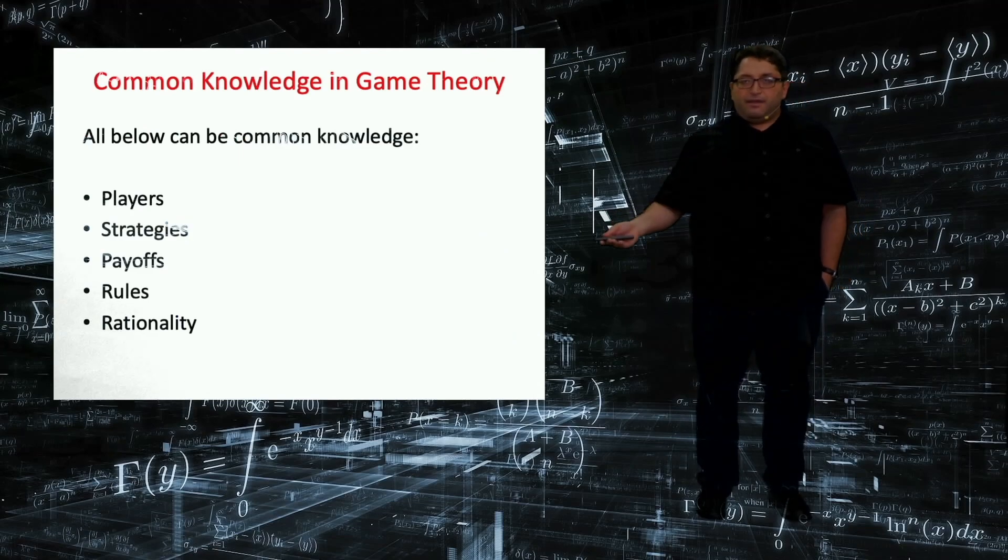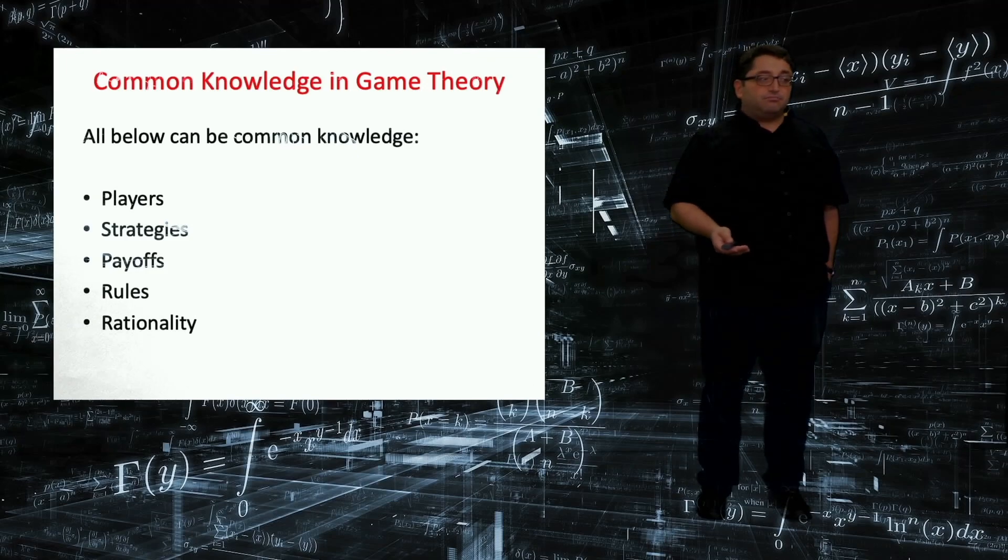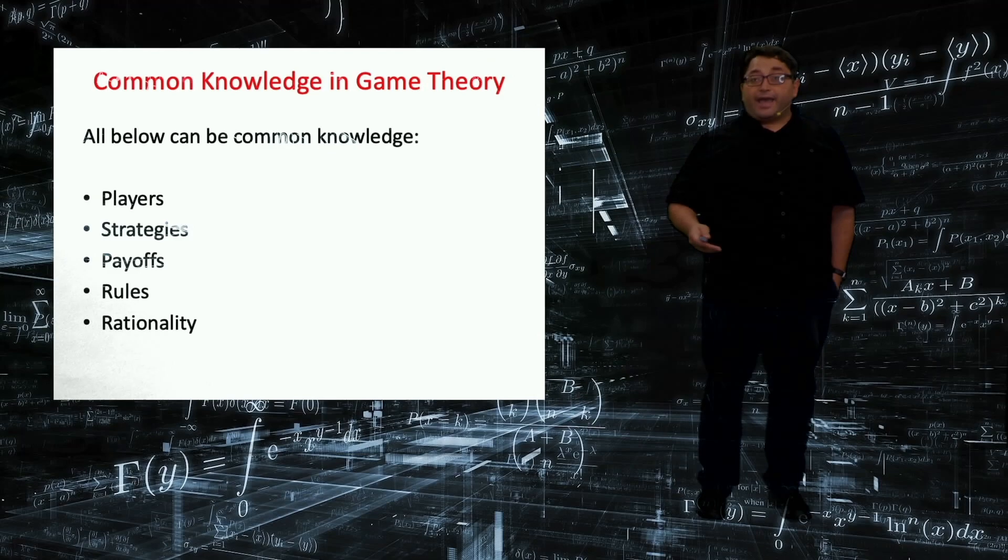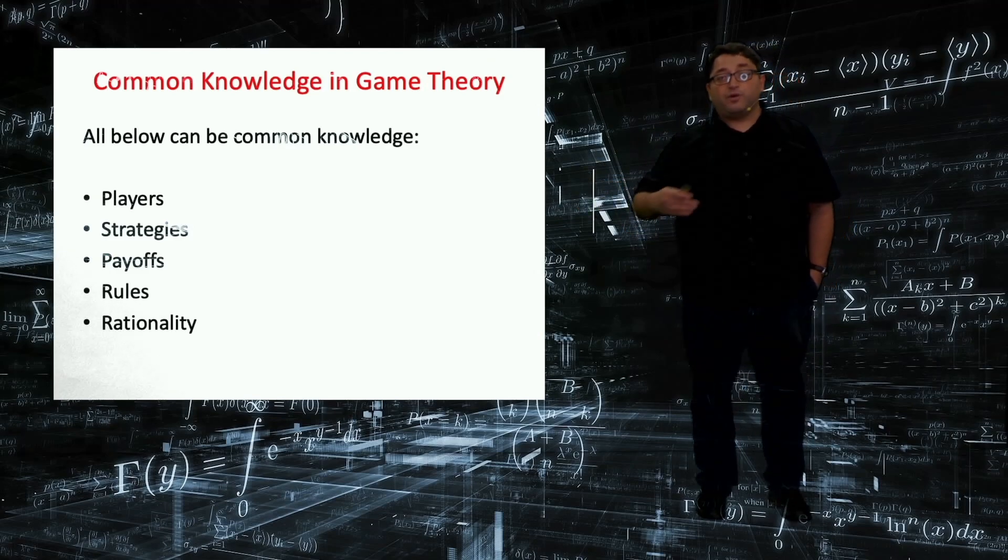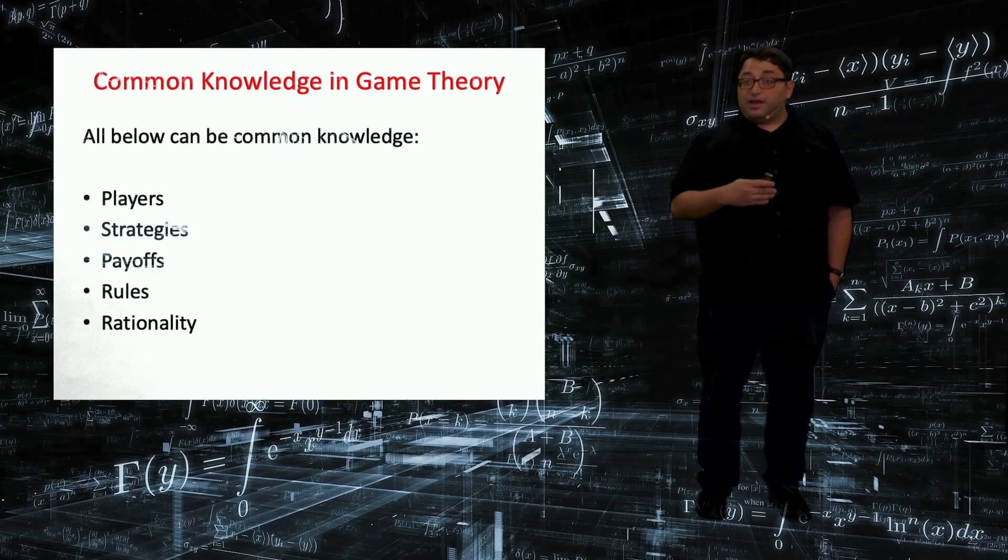So in game theory, many things can be common knowledge. Players themselves, their strategies, payoffs, rules, and the axiom of rationality. We can also define it as common knowledge of rationality, which is everybody is rational, everybody knows that everyone is rational, everyone knows that everyone knows that everyone is rational, and so on until infinity.